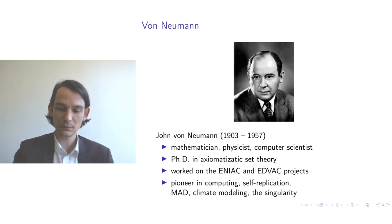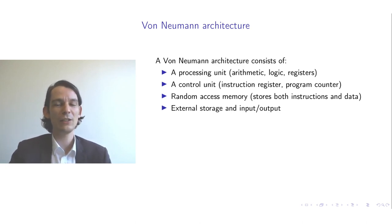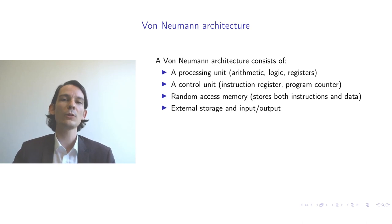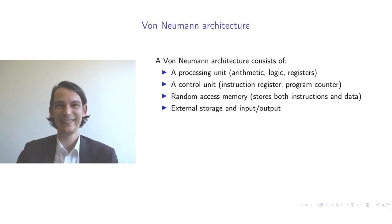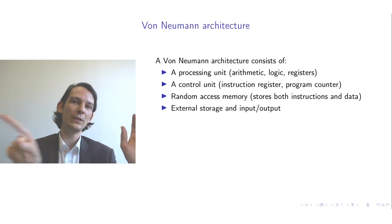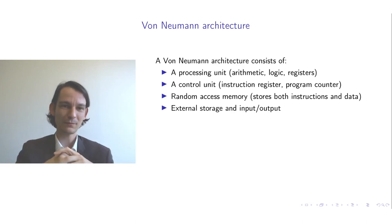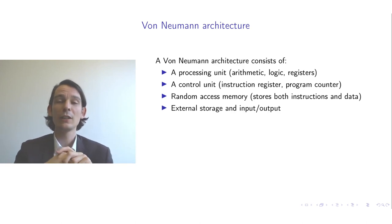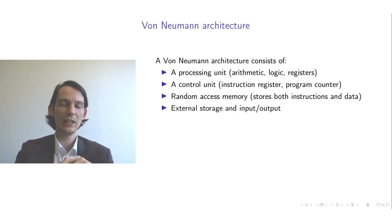Let's continue with the von Neumann architecture. It is a way of building computers out of components. The most important components are the processing unit, the control unit, random access memory — memory that can be addressed randomly, providing continuous storage of data where an address allows you to point into that space and pull out data at an arbitrary point — and external components allowing you to store data and perform input and output.